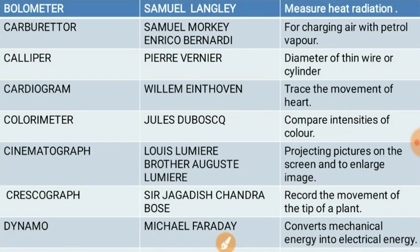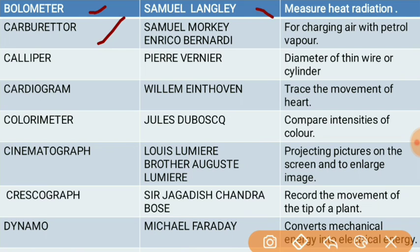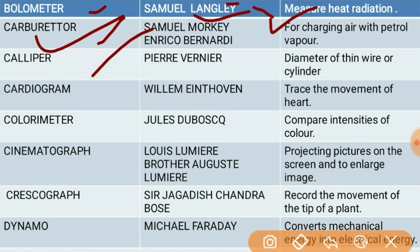The next instrument is the bolometer. The bolometer was invented by Samuel Langley. The bolometer is used to measure heat radiation.